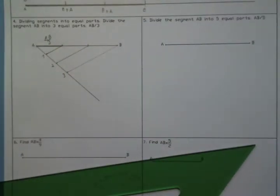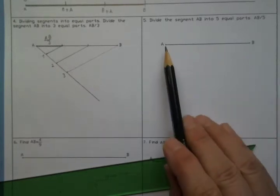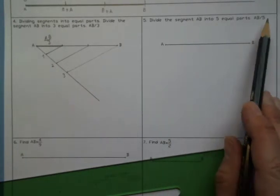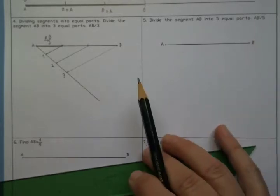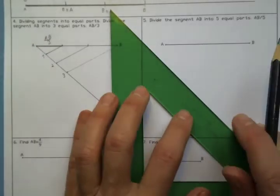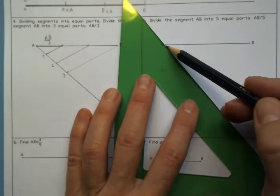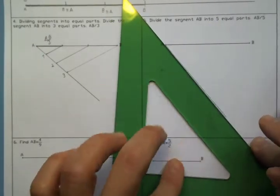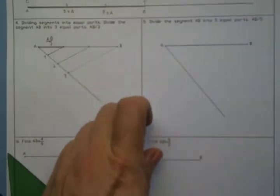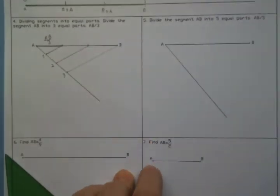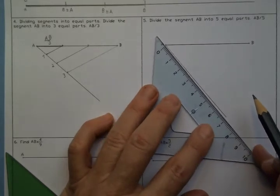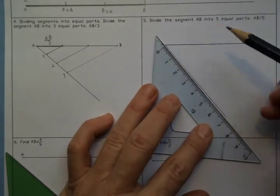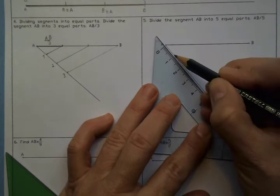Now I'm going to solve exercise number five. It is the same. I have a segment and we have to divide the segment into five equal parts. So I draw a ray from A. I'm going to measure now five centimeters from A and I draw a point.